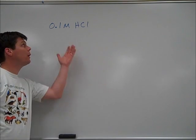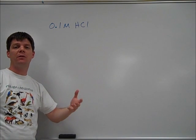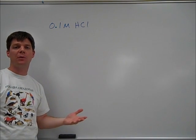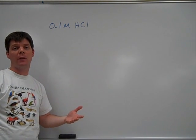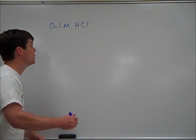If we have a solution of 0.1 molar HCl, we have learned previously that this is going to dissociate at a 100% rate. So this means actually that we have a 0.1 molar solution of hydrogen ions.